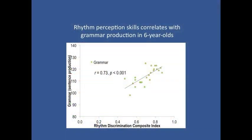We found a strong correlation between rhythm perception and grammar production. Remember that the tasks were quite different — one measured perception of musical rhythms, and the other measured sentence production. So it was especially striking to note that children who were better at telling musical rhythms apart were also better at the expressive grammar test.